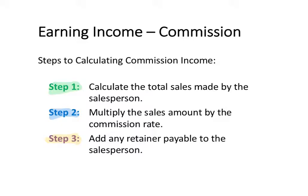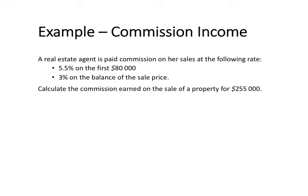So let's have a look at an example calculation that involves the payment of commission. In the example, a real estate agent is paid a commission on her sales at the following rates: 5.5% on the first $80,000 and 3% on the balance of the sale price. We want to calculate the commission earned on the sale of a property of $255,000.